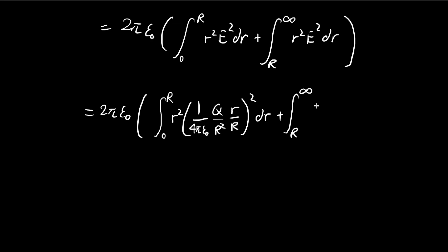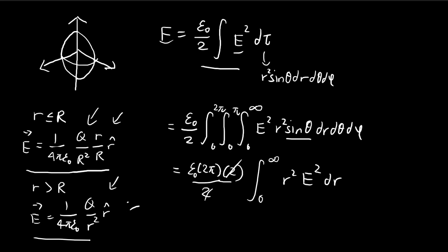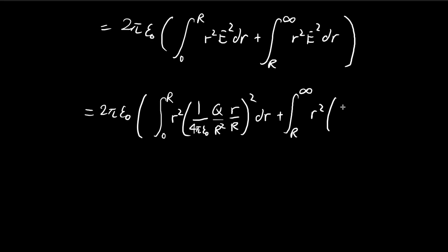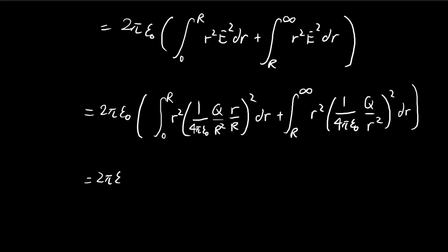From R to infinity we have the outside expression — when r is outside the sphere the electric field looks the same as a point charge. Let's pull out the constants for convenience, including the q squared, so those terms come out front.